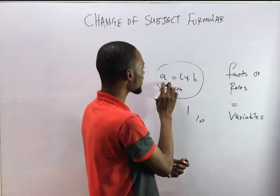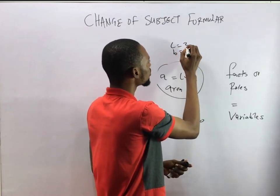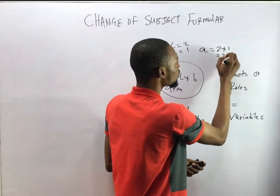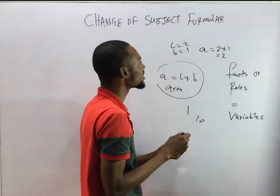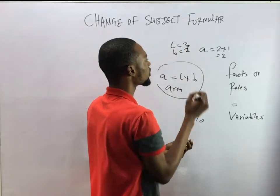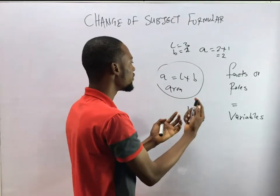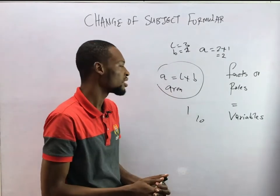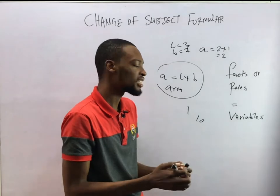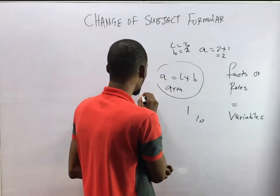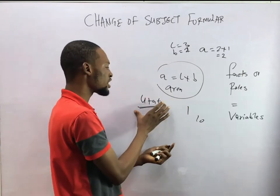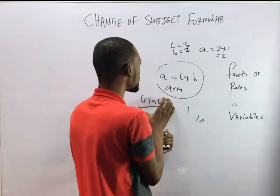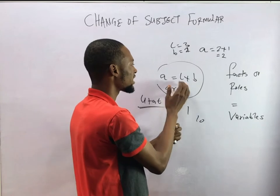The opposite of a variable is a constant — numbers like 1 or 10 are generally called constants. So if L equals 2 and B equals 1, area is 2 times 1 equals 2. If we change length to 3 and breadth to 2, area will certainly change. These are variables, and this is an equation. Expressions, on the other hand, don't have an equality sign — for example, u plus at is an expression.